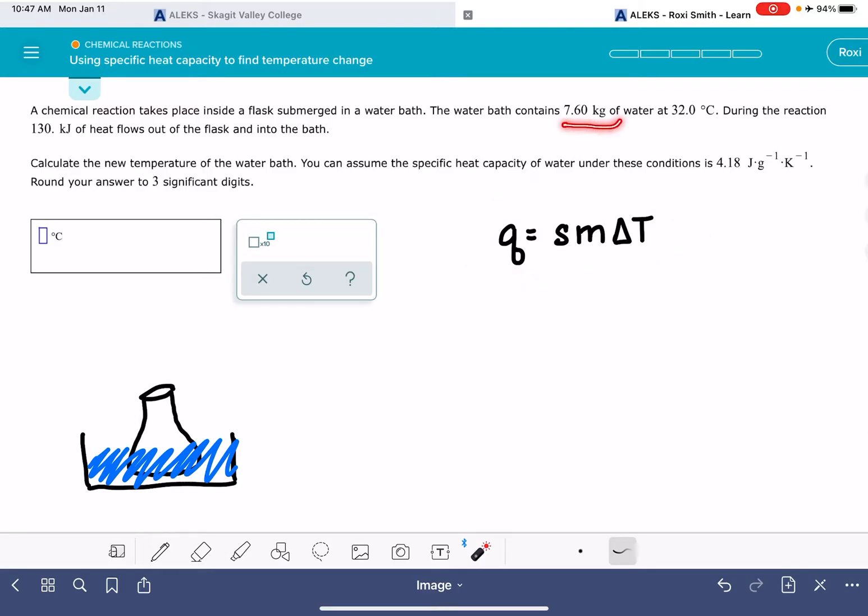First, it tells us that we have 7.60 kilograms of water. So that's our mass of water. And remember in the QSMAT equation, the mass needs to be in units of grams, not kilograms. So we'll multiply this by 1,000, 7,600 grams.